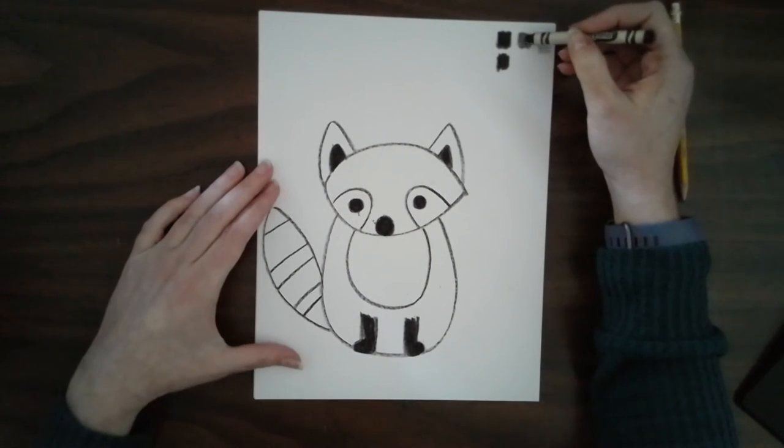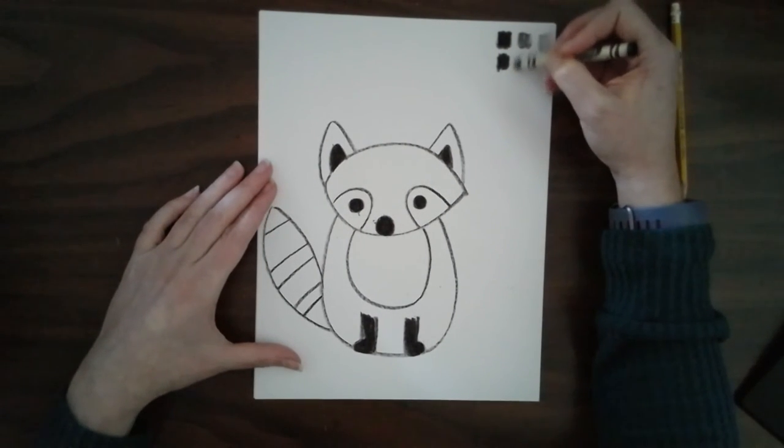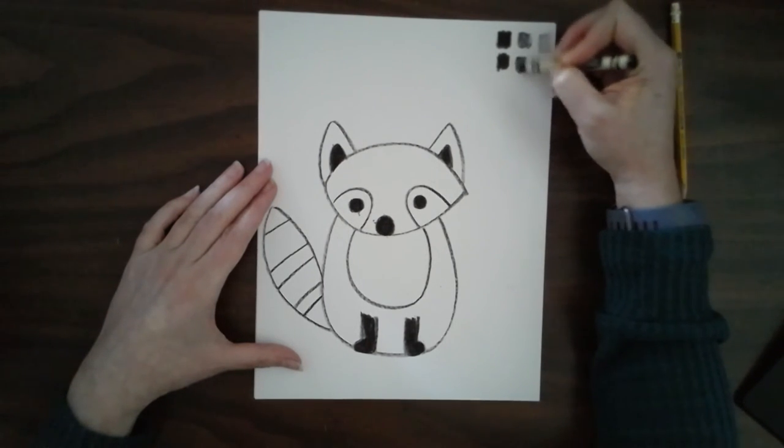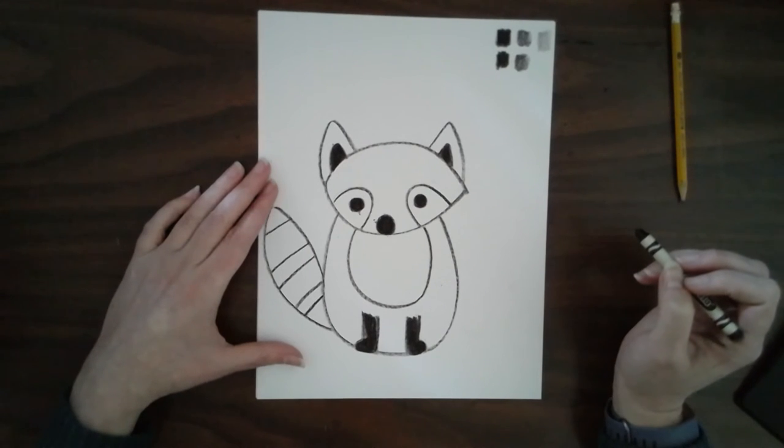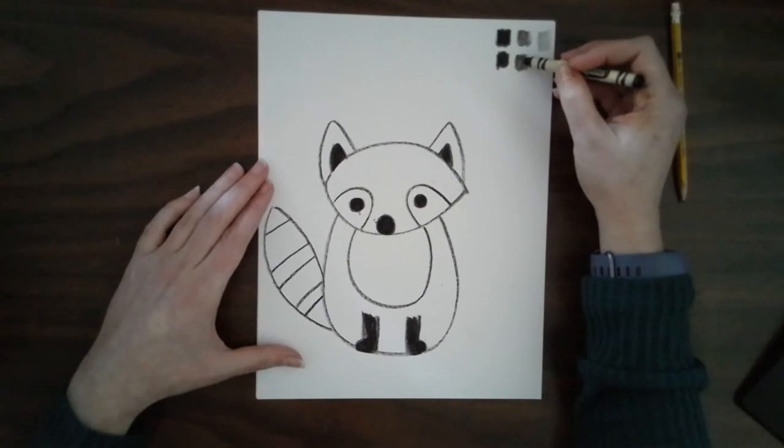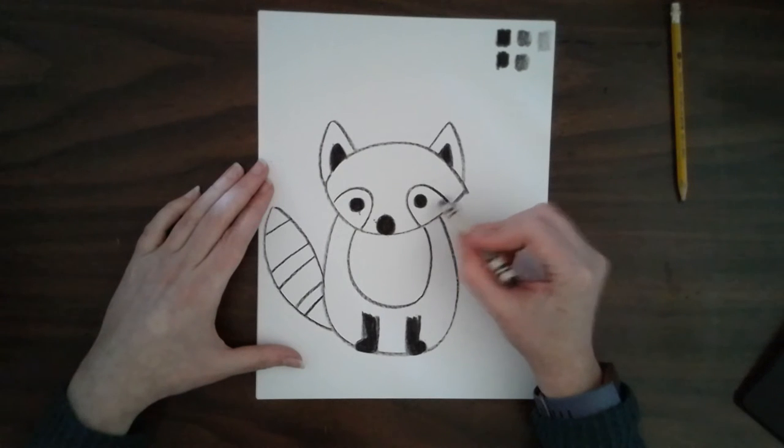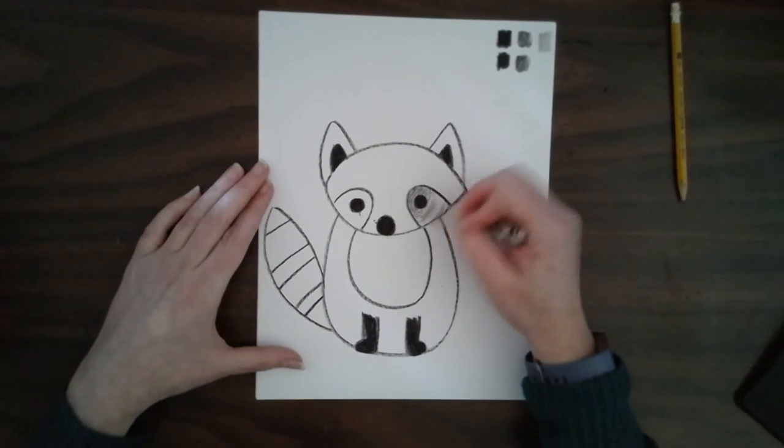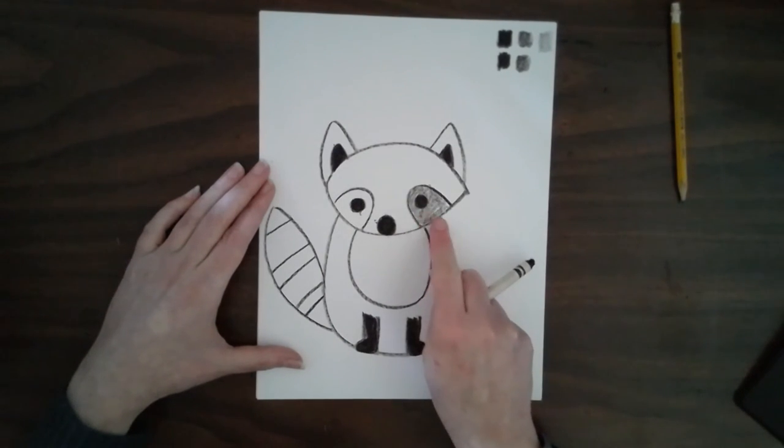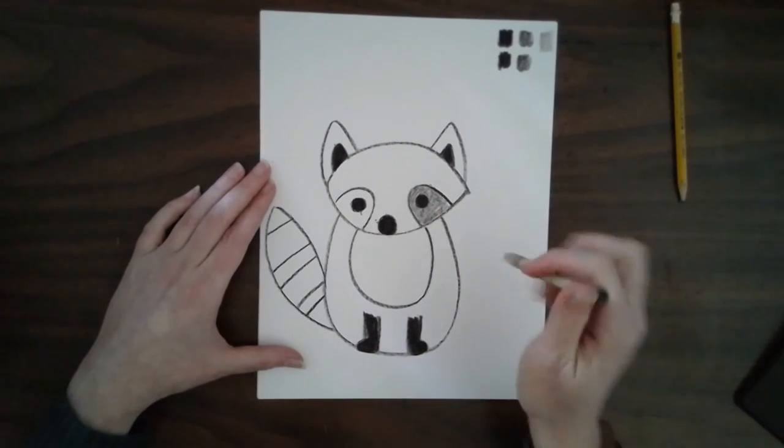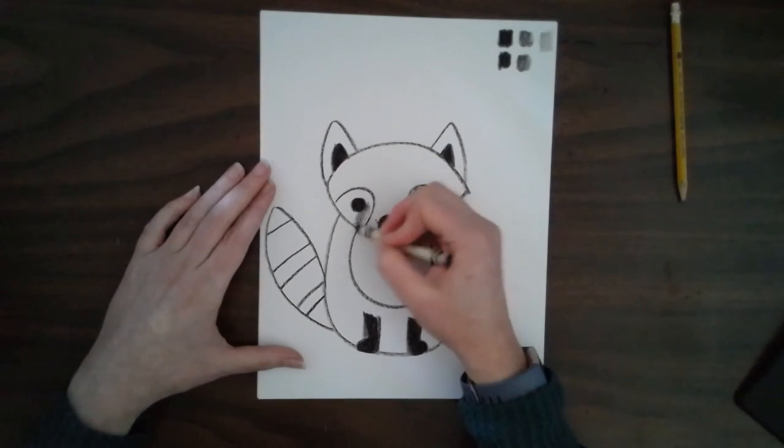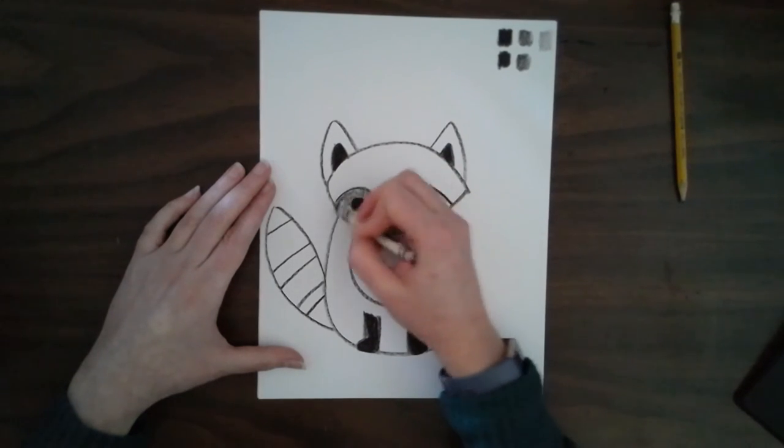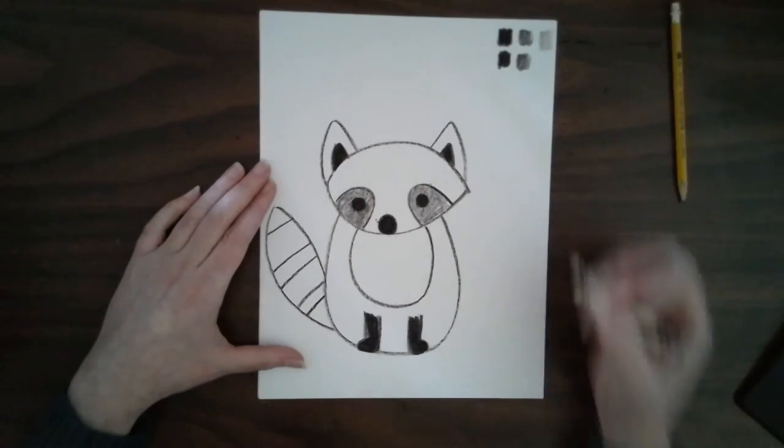Now let's do the medium value. That means I'm just going to kind of color normal. I'm not going to push too hard, and I'm not going to try to make it really soft. Just normal. Alright, so I'm going to put my medium values on my little raccoon's mask. Look, I can still see his eyes, so I didn't make it too light. I did it just right in the middle. A medium value. There we go.